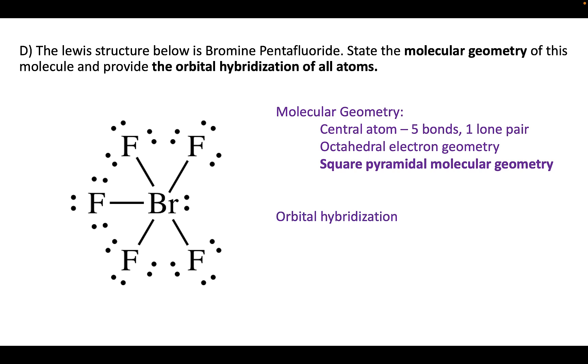For the orbital hybridization, note that the fluorines are all configured the same and the bromine is configured differently. Bromine is going to have six electron domains, so sp3d2, while the fluorines are going to be sp3 for having four electron domains: one bond, three lone pairs for each.